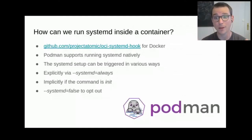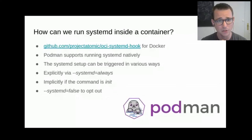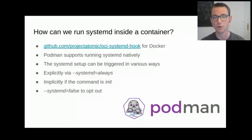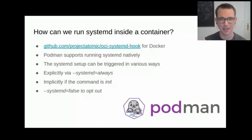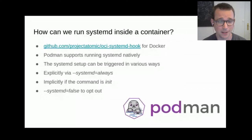It may not come as a surprise that Podman supports SystemD natively. This SystemD setup — setting up all these mounts and massaging the config — can be triggered in various ways: explicitly by using the --systemd flag set to always, or implicitly. When Podman is about to execute a container where the entry point or command is pointing to init (sbin init, bin init, or similar paths), the mounts will be set. And if you want to opt out, you can set the --systemd flag to false.